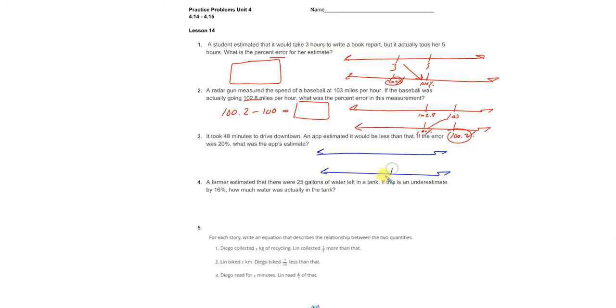So it took 48 minutes to drive downtown, so that's what it actually took - that's the hundred percent. The app was 20% off and it was less, so 20% less would be at 80% right here. Our job is to find this, so 80 times 48.